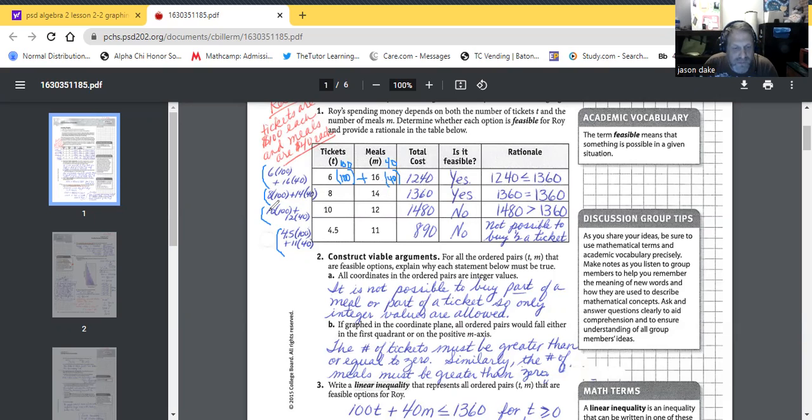We have 10 tickets, 12 meals. If he wants 10 tickets, 12 meals, can we do that? 10 times 100 plus 12 times 40 equals $1,480. No, that puts it over Roy's budget. It is not feasible because $1,480 is greater than $1,360.